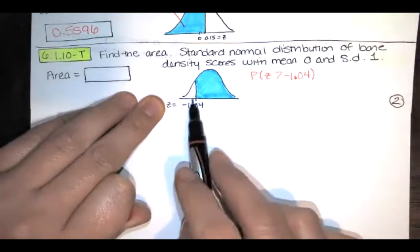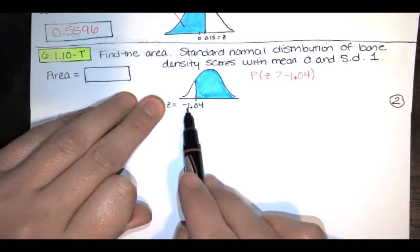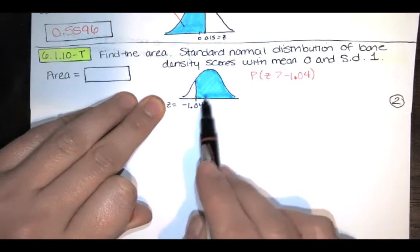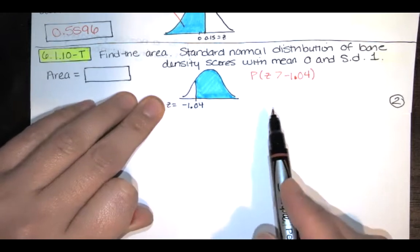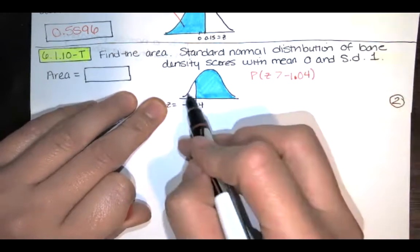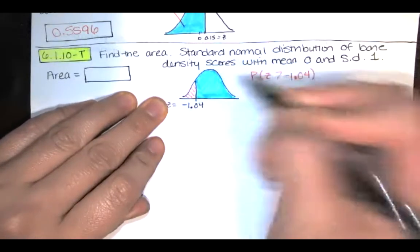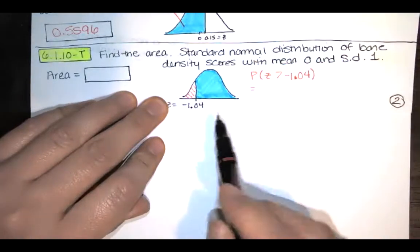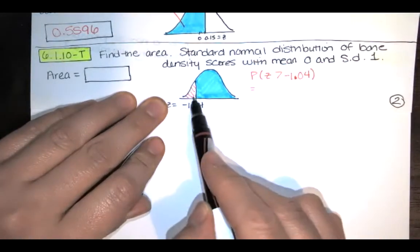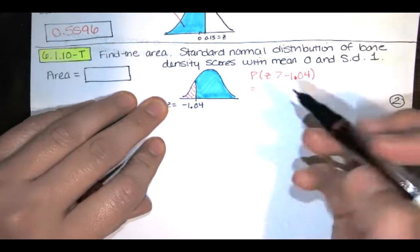So we're saying what's the probability that z is more than 1.04 standard deviations below the mean. In order to find this area I need to find the area to the left instead because our table only contains areas to the left. Now I know once I look this up in a table this area is going to be 1 minus the area to the left.